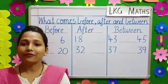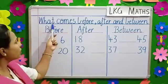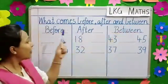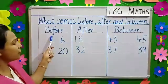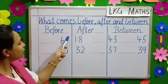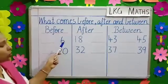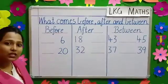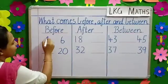So children, our first topic is what comes before, after and between. When we write what comes before, we write here the number that comes before the given number. So the given number here is 6. What comes before 6 children? 5.